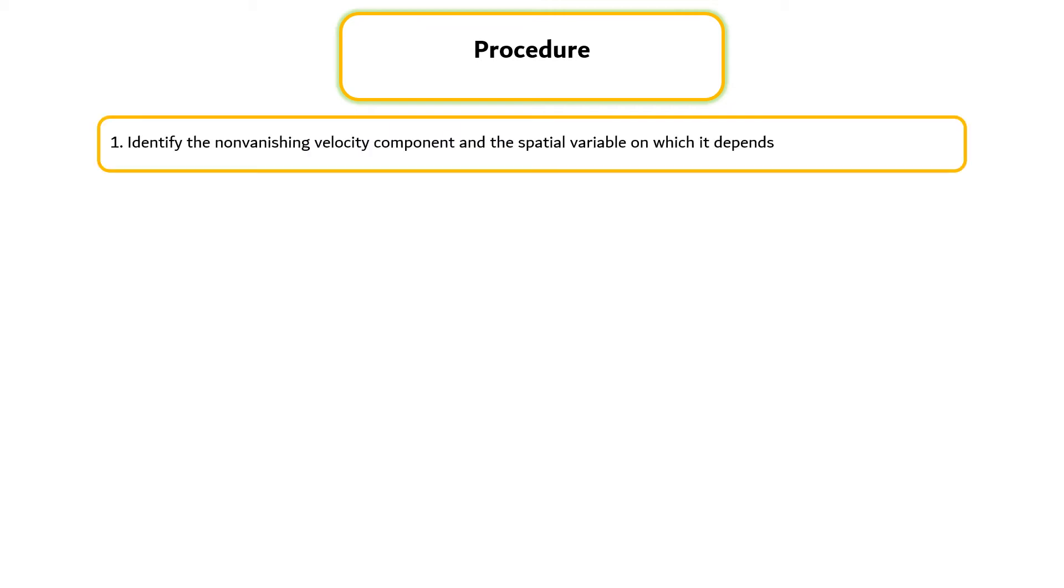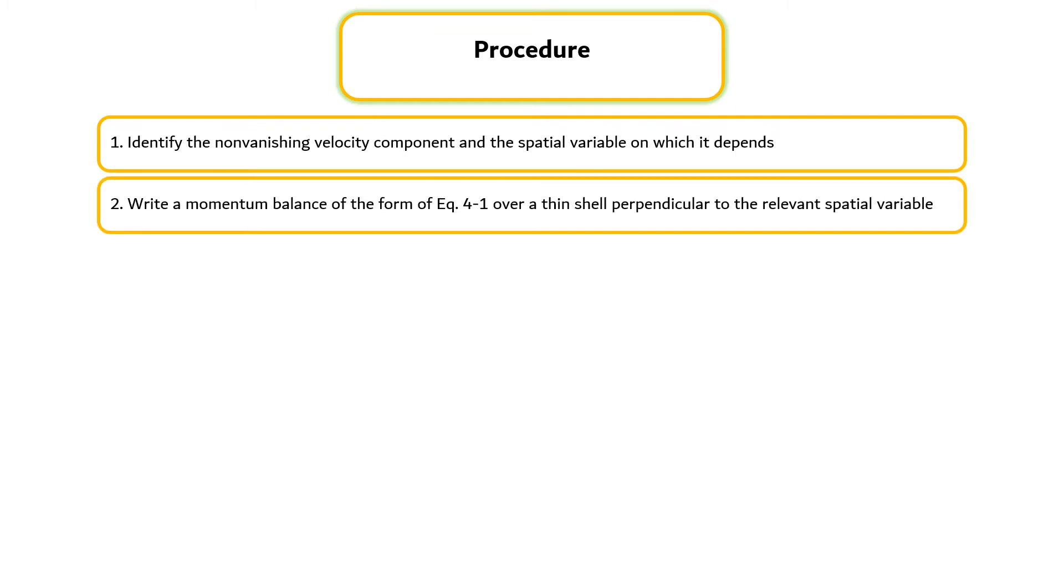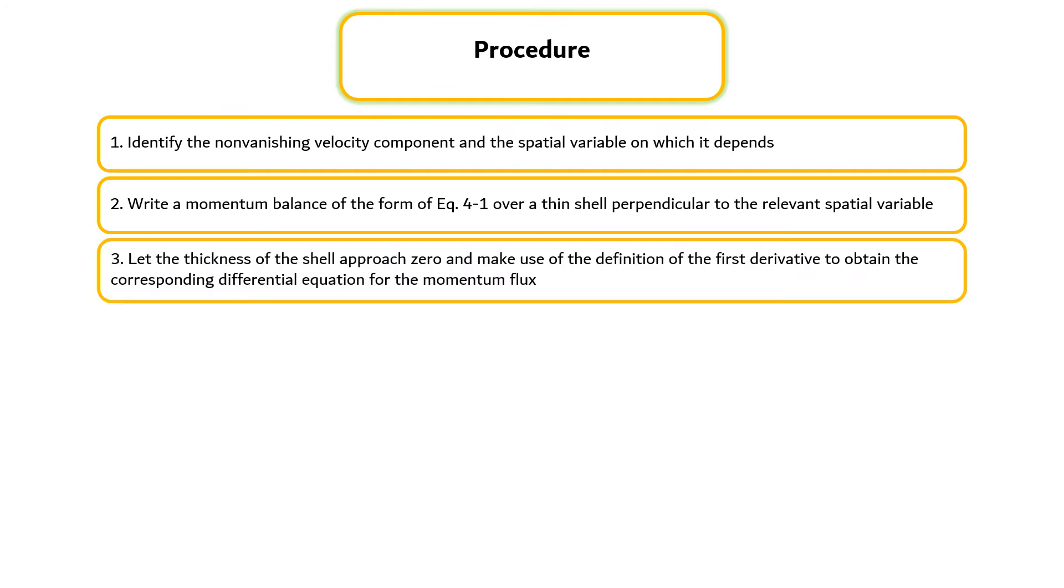There are seven steps for setting up and solving viscous flow problems. First, identify the non-vanishing velocity component and the spatial variable on which it depends. Second, write a momentum balance of the form of equation 4.1 over a thin shell perpendicular to the relevant spatial variable. Third, let the thickness of the shell approach zero and make use of the definition of the first derivative to obtain the corresponding differential equation for the momentum flux.